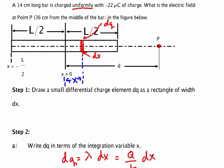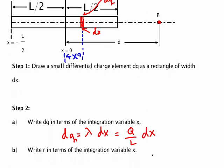I also need to write r in terms of the integration variable, and I can do that by just looking at my picture. R is the distance from my box to the point P — it's this distance. There's the point, and I'm going out to point P. Well, that's the total distance d, minus the distance x that the box is from the origin. So r is simply d minus x.